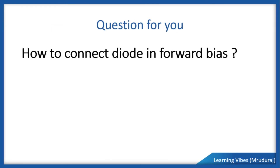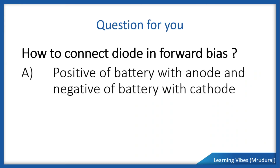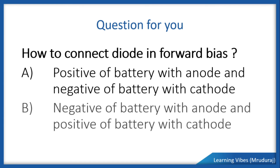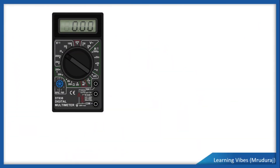Before moving ahead, there is a quick question for you: how do you connect a diode in forward bias condition? Option A: positive of battery with anode and negative of battery with cathode. Option B: negative of battery with anode and positive of battery with cathode. Answer in the comment section below. If you have understood it properly, let me know.